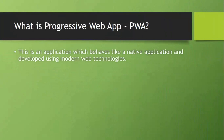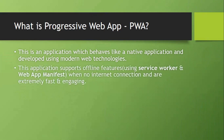What is a Progressive Web App? This is an application which behaves like a native application and is developed using modern web technologies. It supports offline features using Service Worker and Web App Manifest with no internet connection, and is extremely fast and engaging.